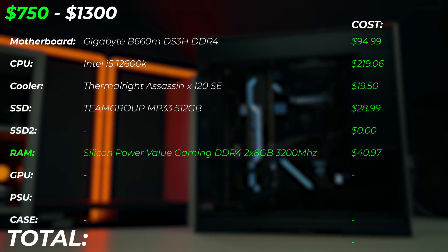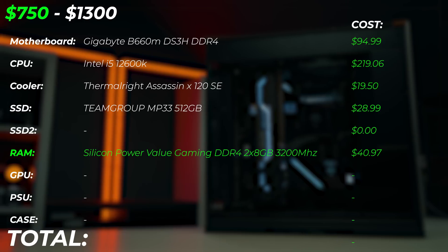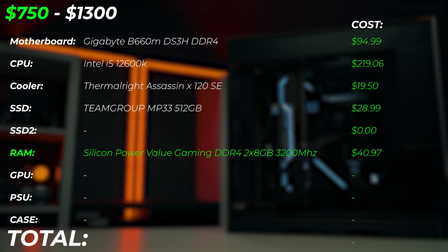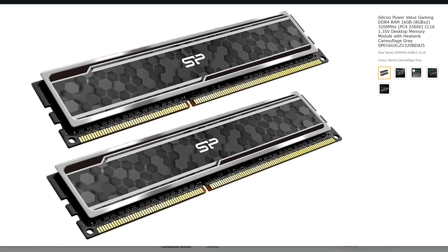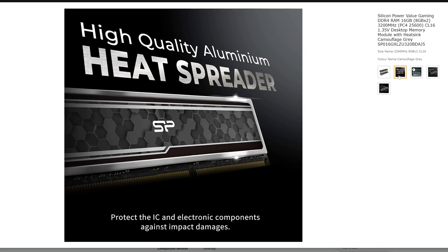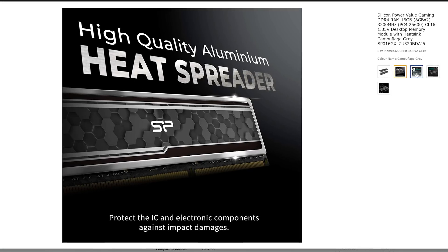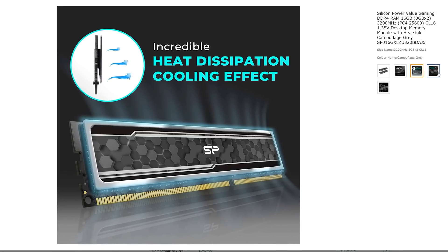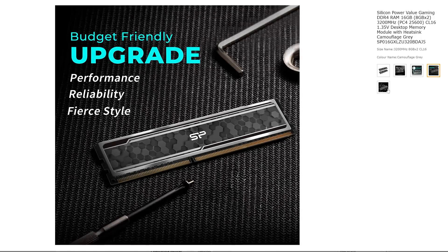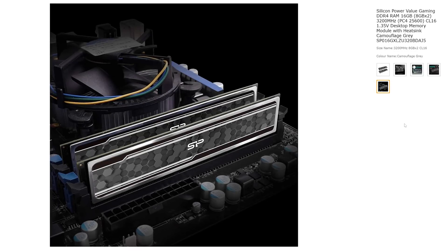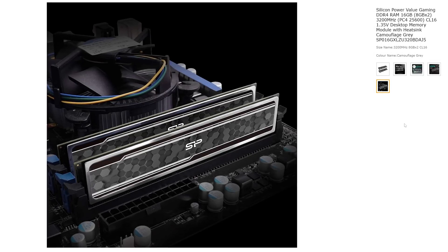For the RAM, we're using 16GB of Silicon Power Value Gaming DDR4 running at 3200 MHz. 16 gigabytes is great to get started, though it's probably going to be the bottleneck of this system. I highly recommend checking out upgrade options if you have budget flexibility, but it's good to get you going. You have four RAM slots on the motherboard, so you can easily add the same kit later and get 32 gigabytes.